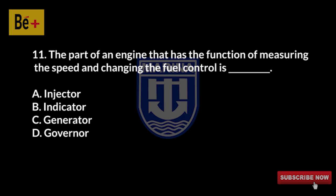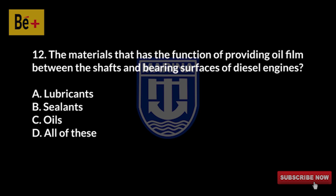The part of an engine that has the function of measuring the speed and changing the fuel control is: A) injector, B) indicator, C) generator, D) governor. The answer is D, governor.